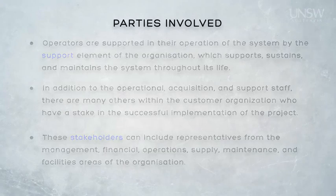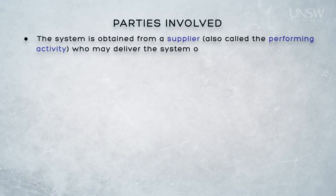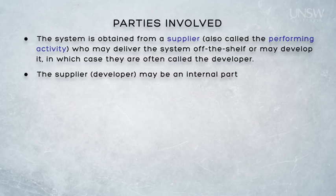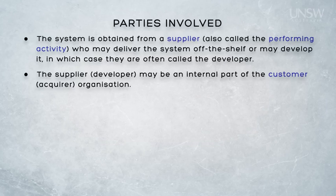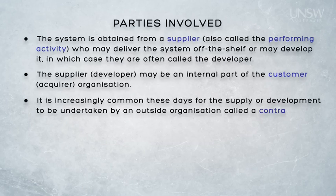The system is most likely obtained from a supplier, also called in some standards the performing activity, who may deliver the system off the shelf, or may develop it, in which case they are also called the developer. The supplier, or the developer, may be an internal part of the customer or the acquirer organisation. If the development of the system is to be undertaken in-house, the acquisition element of the organisation — the acquirer — will engage with the development organisation, the developer, in order to support the system.